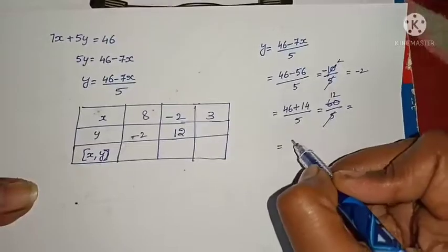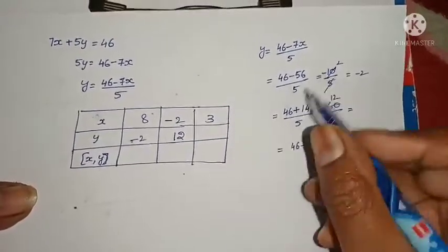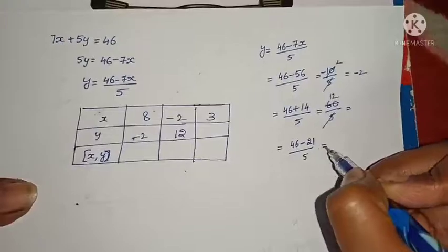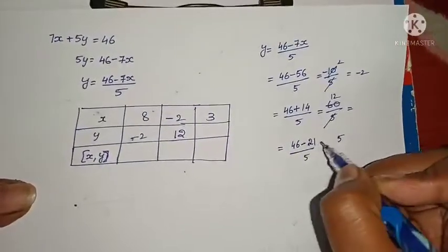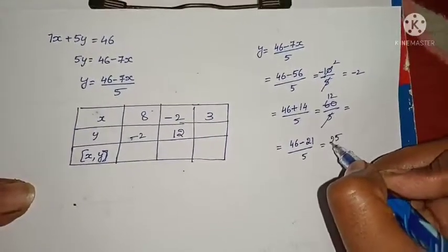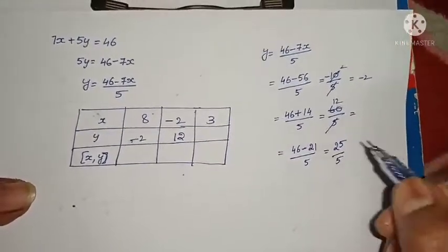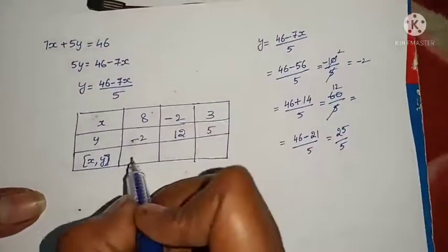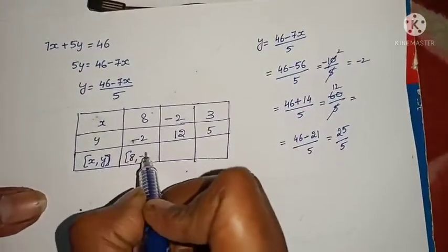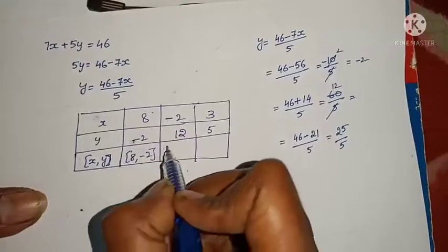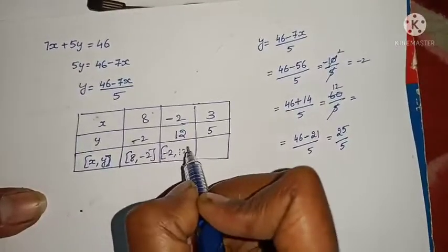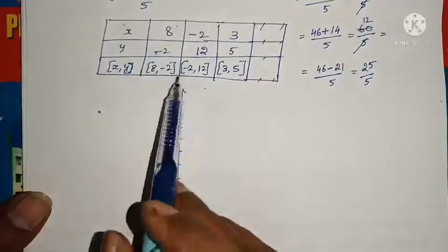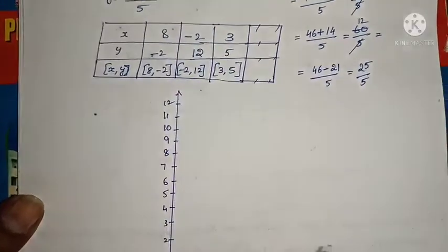For equation 2, y equals (46 minus 7x) divided by 5. Substituting x equals 8: y equals (46 minus 56) divided by 5 equals minus 10 divided by 5 equals minus 2. Substituting x equals minus 2: y equals (46 plus 14) divided by 5 equals 60 divided by 5 equals 12. Substituting x equals 3: y equals (46 minus 21) divided by 5 equals 25 divided by 5 equals 5. Points for equation 2: (8, minus 2), (minus 2, 12), and (3,5).